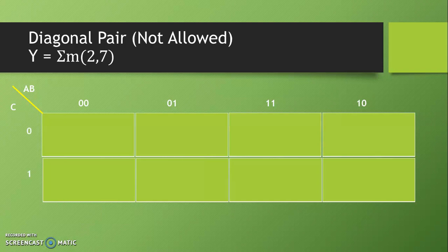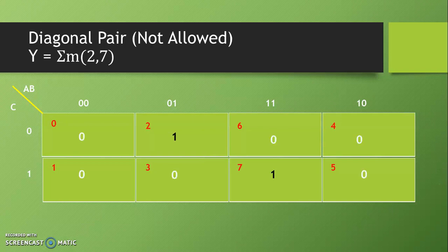On the vertical plane we take one variable that is C and we give numbers 0 and 1. We give decimal numbers to each cell that is 0, 1, 2, 3, 4, 5, 6, 7. Now minterms 2 and 7 are the cells for which we are getting output high, so we write 1 in those cells. In all other cells we write 0.